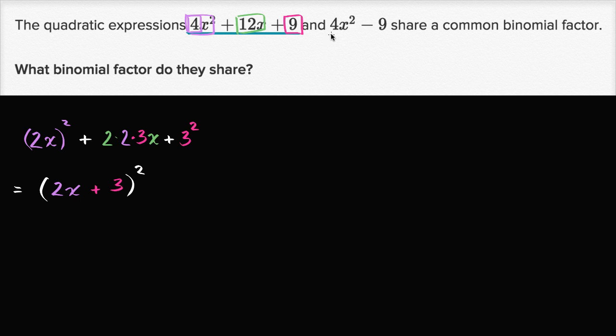And immediately when you see this one, it looks like it's a difference of squares. So this one right over there looks like a difference of squares to me. This we can rewrite as (2x)² minus 3². So minus 3².